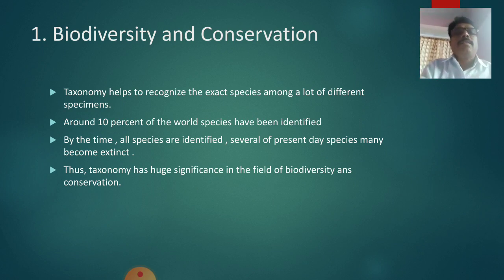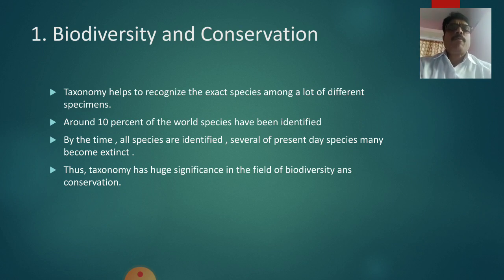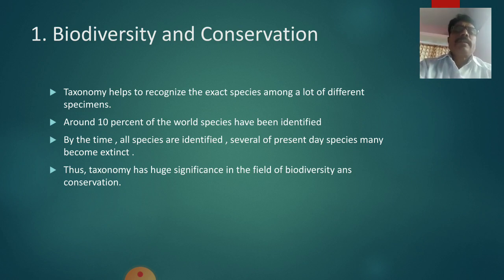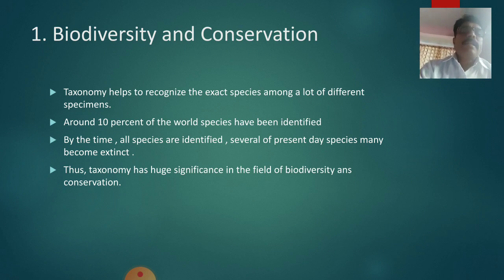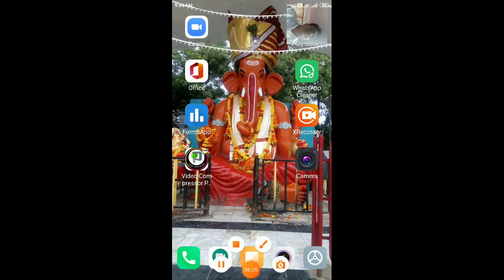Biodiversity and conservation is also an important point. Taxonomy helps to recognize the exact species among a lot of different species or specimens. Around 10 percent of the world's species have been identified. By the time all species are identified, several present-day species may become extinct, and thus taxonomy has huge significance in the field of biodiversity and conservation.